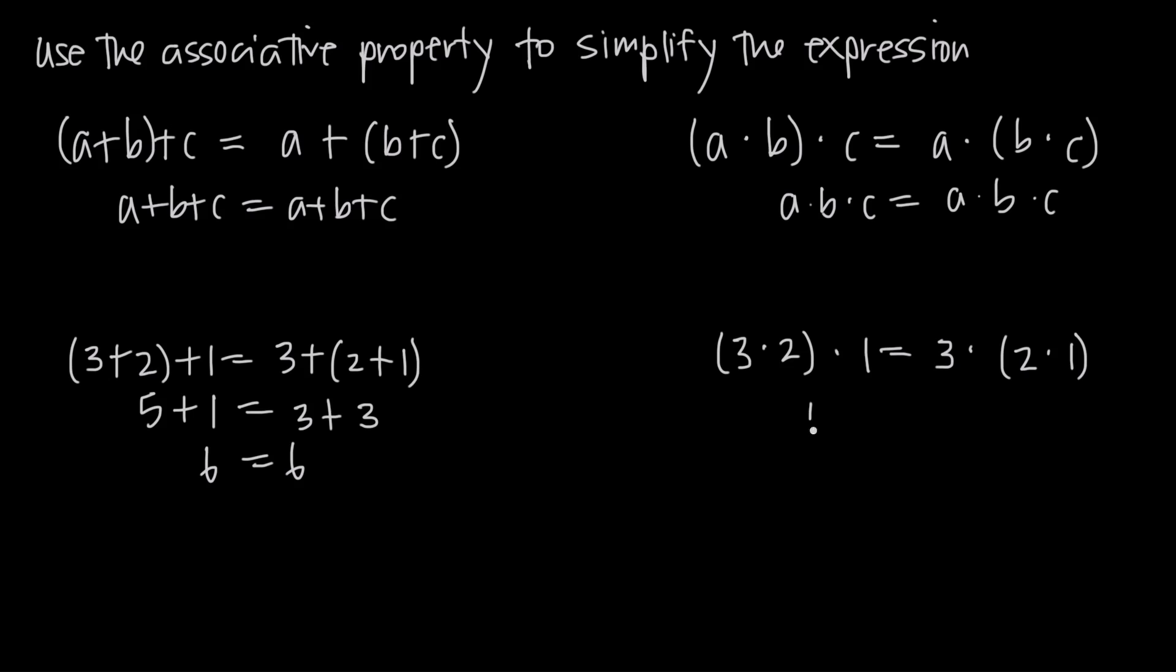So on the left hand side, 3 times 2 is 6, so we'll get 6 times 1. On the right hand side, 2 times 1 is 2, so we'll get 3 times 2. And of course that gives us 6 on the left and 6 on the right, so they're equal to one another.